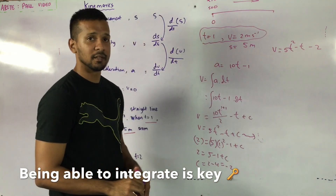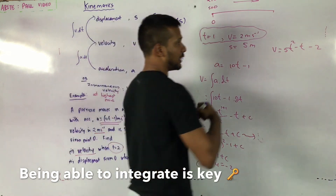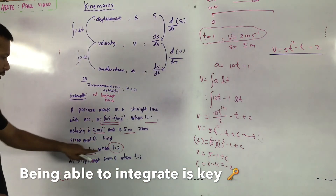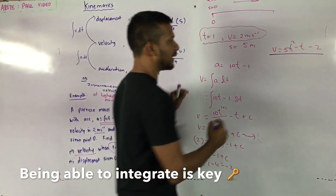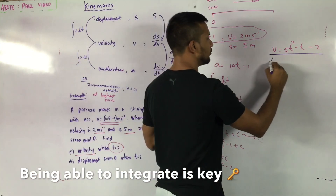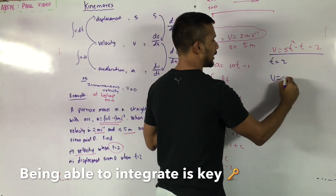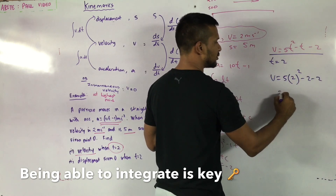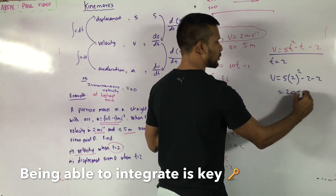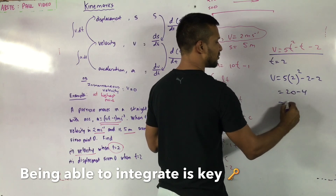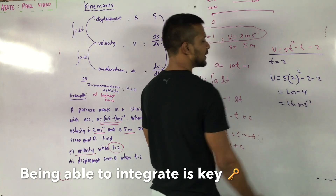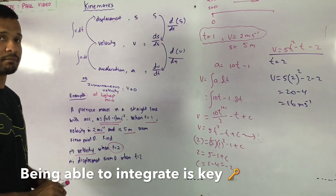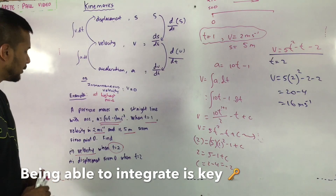Now we have the actual velocity equation: v = 5t² − t − 2. We can now find velocity when t = 2: v = 5(2²) − 2 − 2 = 5(4) − 4 = 20 − 4 = 16 meters per second.